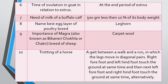Question six: Time of ovulation in goat in relation to the estrus cycle. Answer: Ovulation occurs in the goat at the end of estrus.